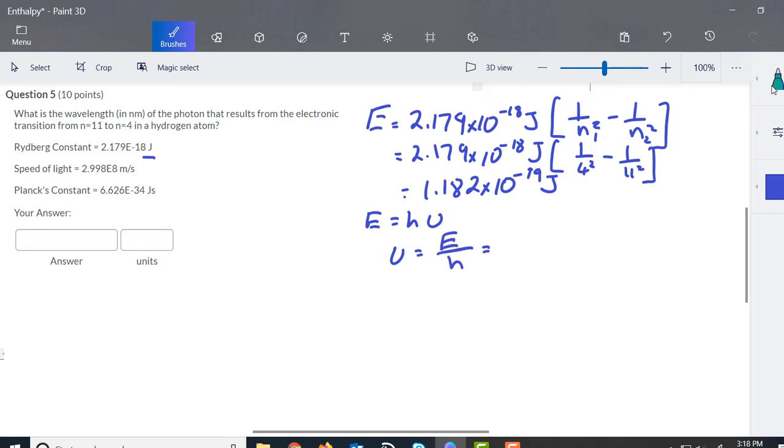Now the E is going to be what we found up here, 1.182 times 10 to the negative 19 joules. The H is Planck's constant, which is given to us here, 6.626 times 10 to the negative 34 joules.